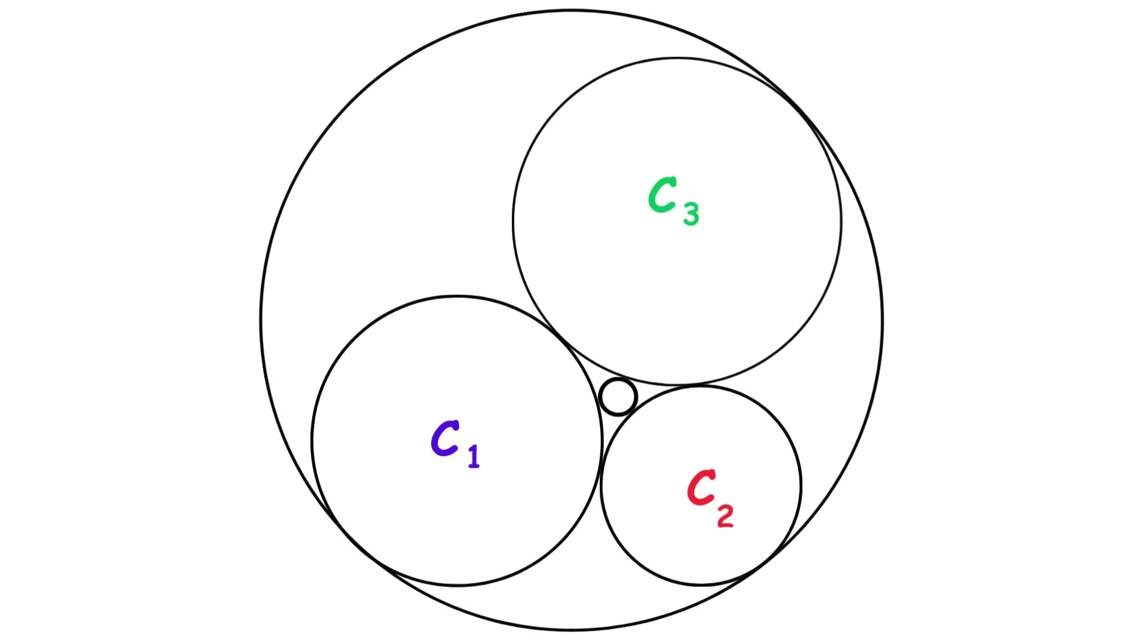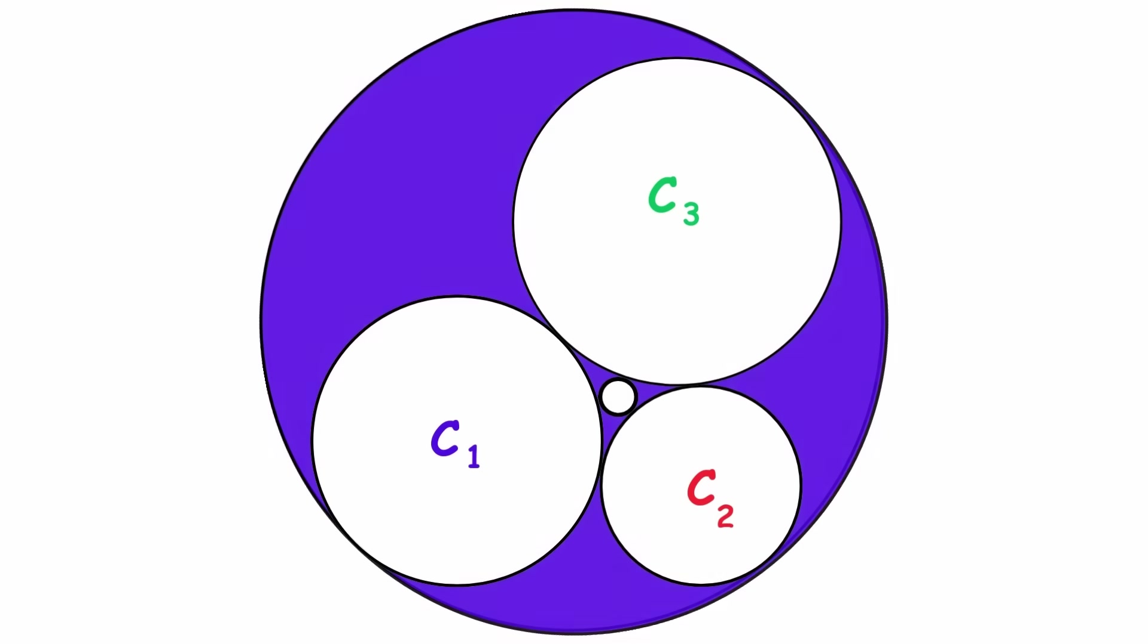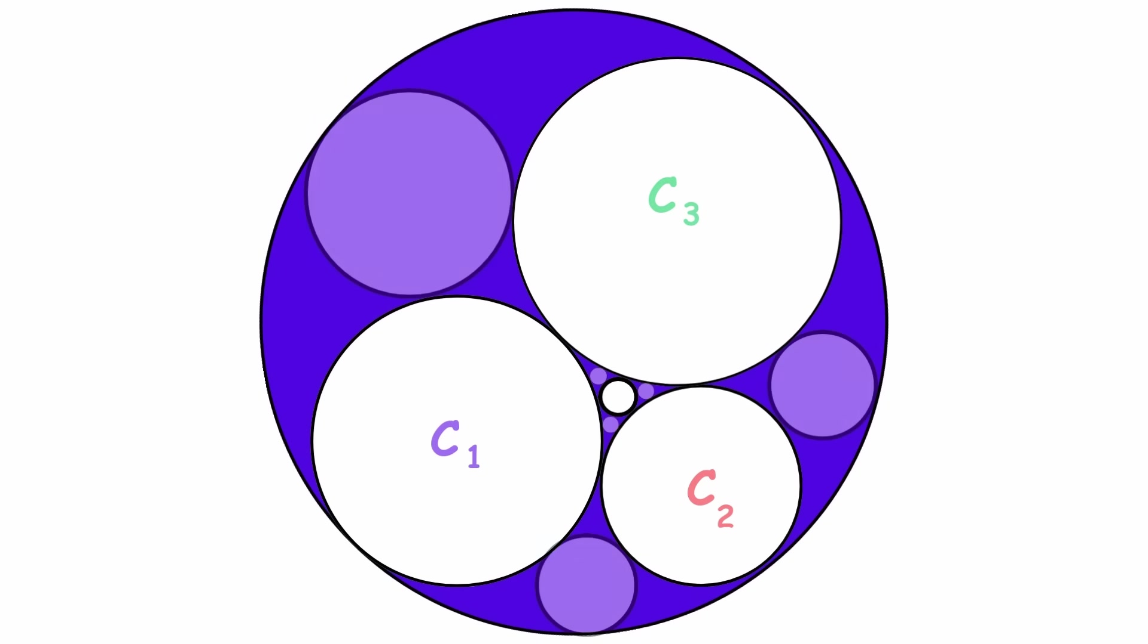there are six gaps that look like curved triangles. If we want, we can draw another circle inside each of these gaps, making the new circle tangent to each of the neighboring circles.